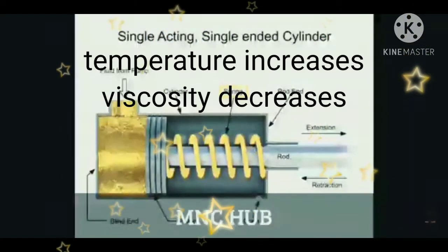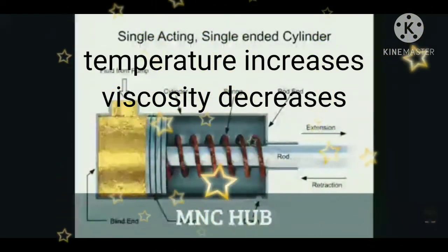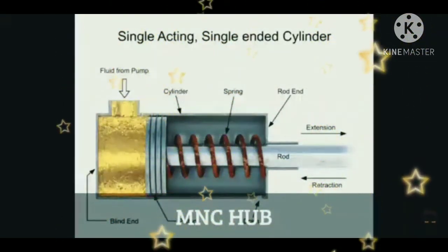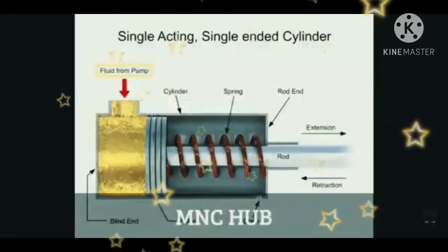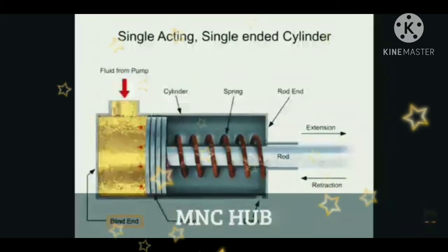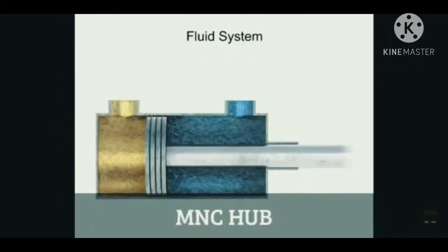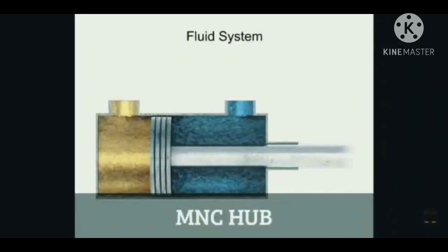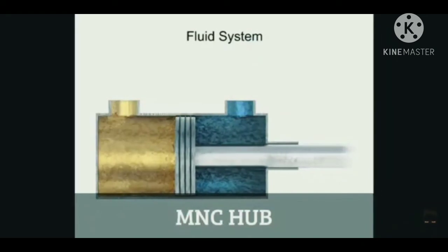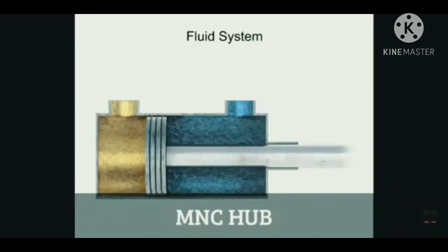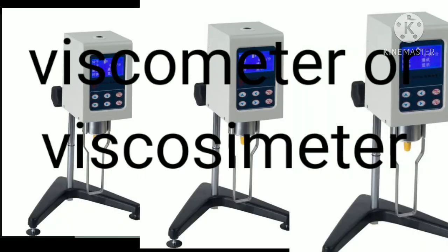If temperature increases, viscosity decreases. For example, heating the liquid makes it thin, viscosity decreases, and then it flows easily. If the liquid is too thick it offers resistance to flow and flows slowly, requiring more power, which causes power loss and excessive load. Rapid wear will also occur when the liquid is too thin. To measure the liquid's viscosity we use a viscometer.